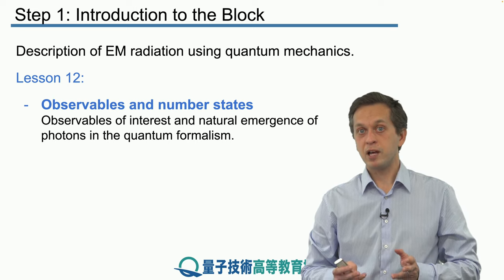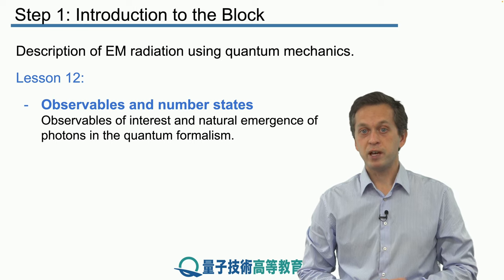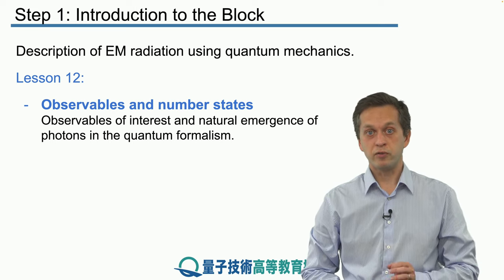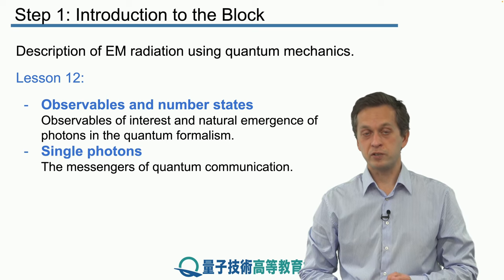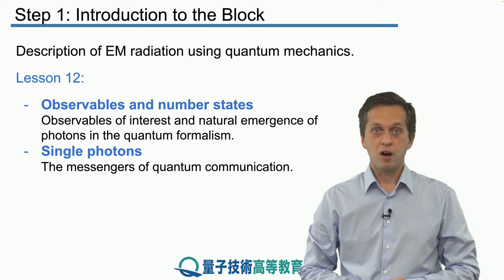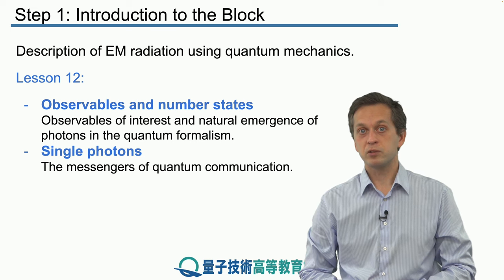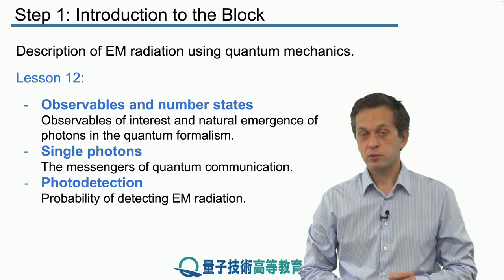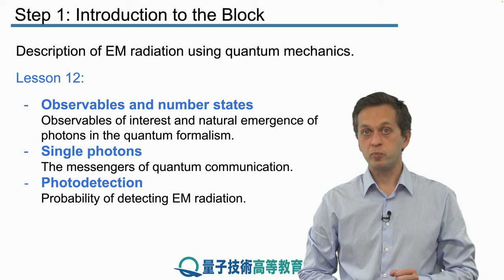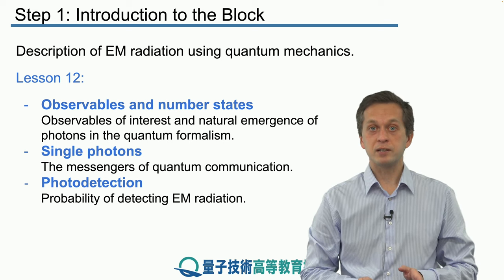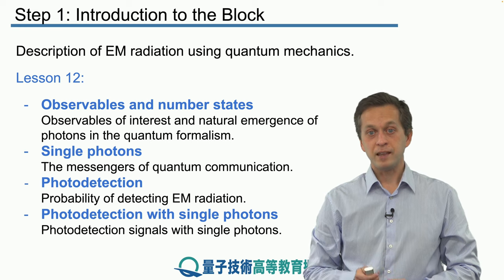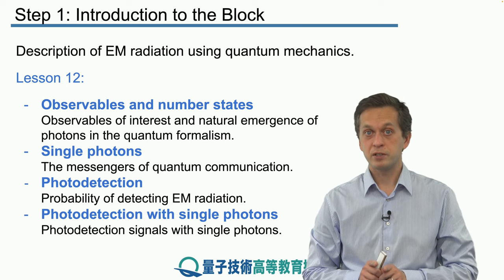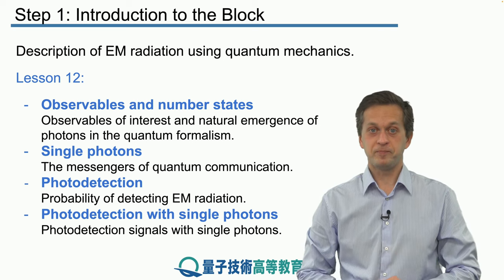In the next lesson, we will apply our formalism of quantum mechanics to describe light. We will begin with observables and number states. Number states are very important states in quantum optics, and they give rise naturally to the idea of photons. This will lead us to a discussion of single photons, the messengers of quantum communication. All of quantum networking and quantum communication relies on single photons or phenomena that can be observed with single photons. In particular, we will be interested in photo detection — giving the general rules on how to compute the probability of detecting photons with perfect as well as imperfect detectors. We will conclude lesson 12 with photo detection with single photons, where we will see our first example where the classical and quantum descriptions of light diverge in terms of the predictions they make.